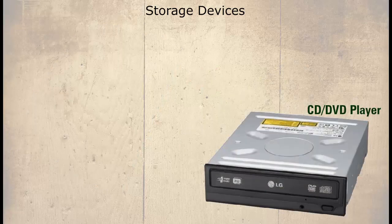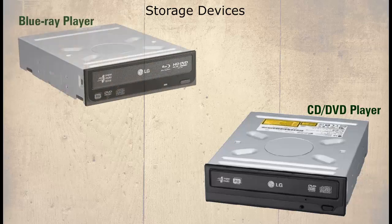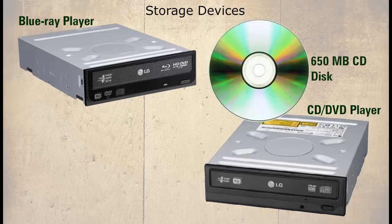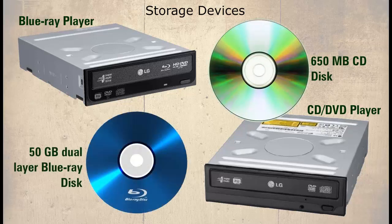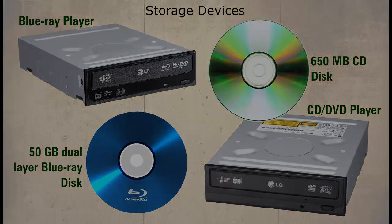Some modern PCs now use SSDs to load the operating system and frequently used applications, with a traditional hard drive installed alongside for increased storage capacity. Most entry level systems do not currently include a solid state drive, but later the differences between SSDs and traditional hard drives are examined. Next is the CD or compact disc and the DVD digital versatile disc technology. Most modern systems may include a Blu-ray device. The storage capacity offered by such media varies from 650MB for a CD up to 50GB for a dual-layer Blu-ray disc, all of which are far greater than the 1.44MB offered by a floppy disk.